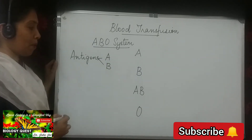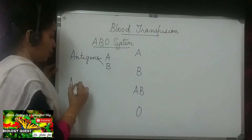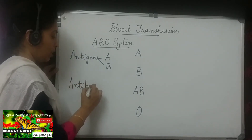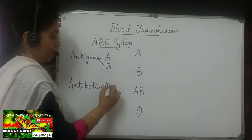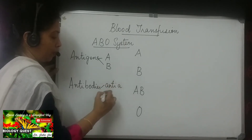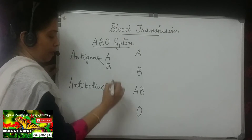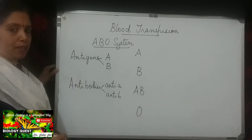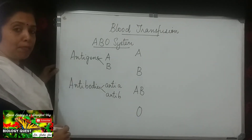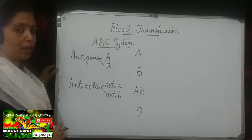There are also two antibodies: anti A and anti B. Antibodies are proteins that are present in the plasma of the blood.